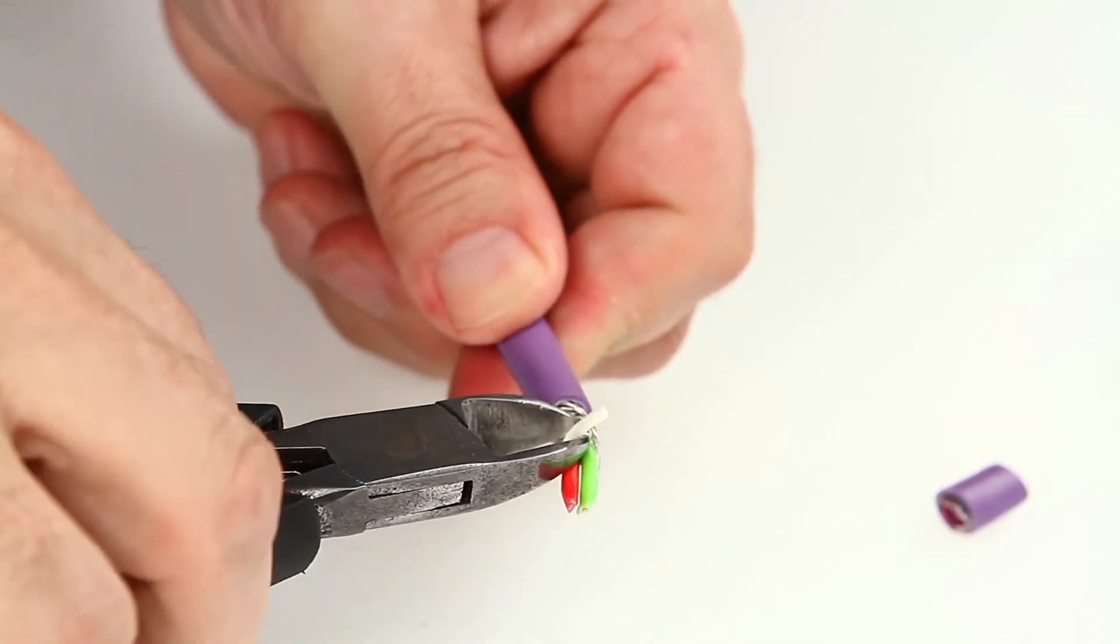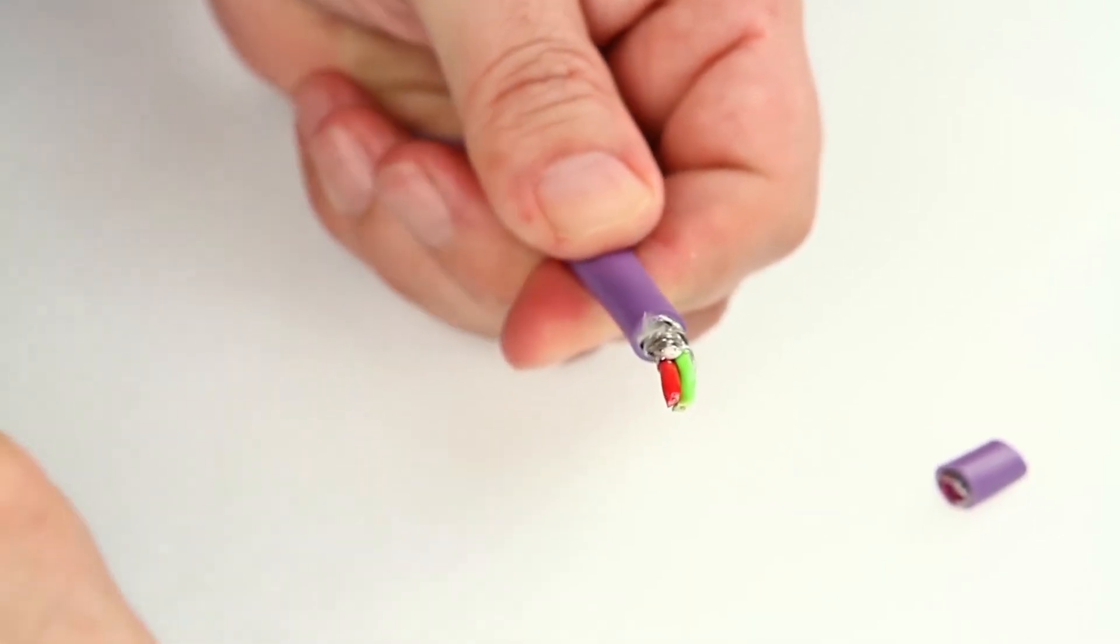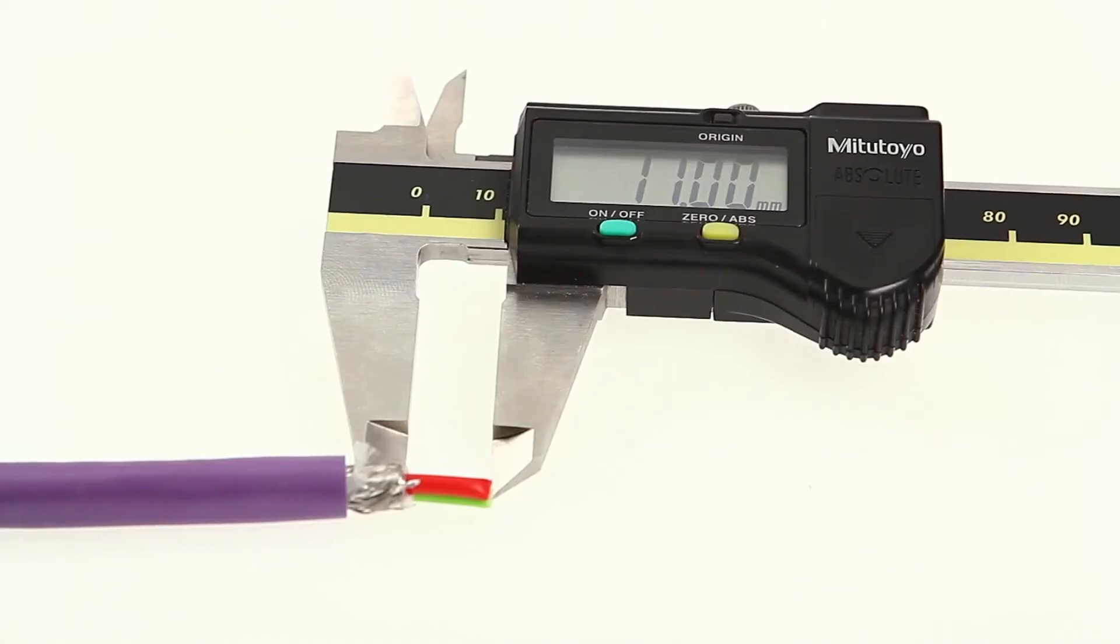Now check that the cable has been prepared properly. The dimensions should be 11mm on the front and 6mm on the rear.